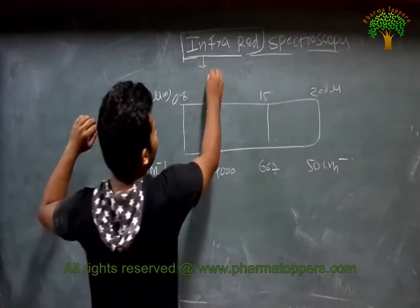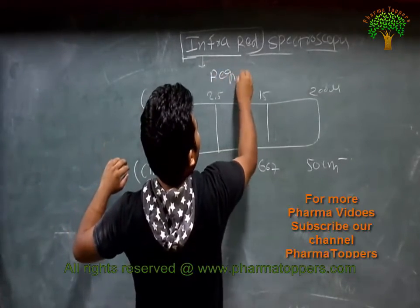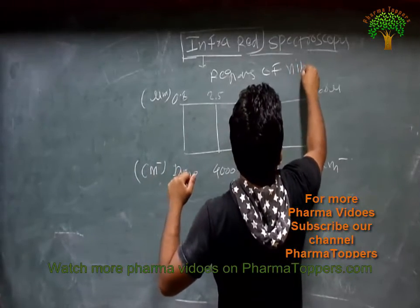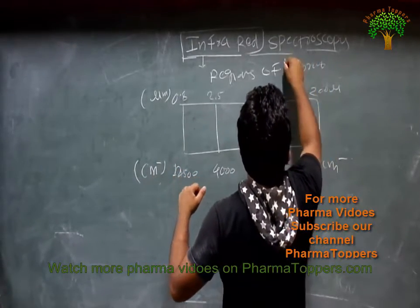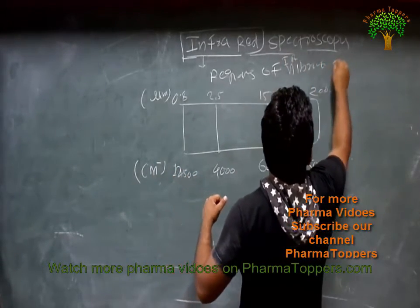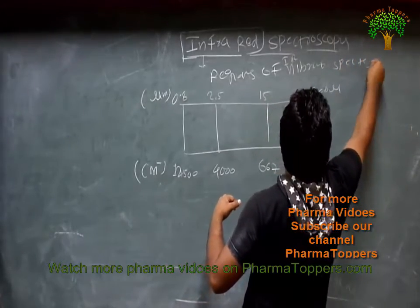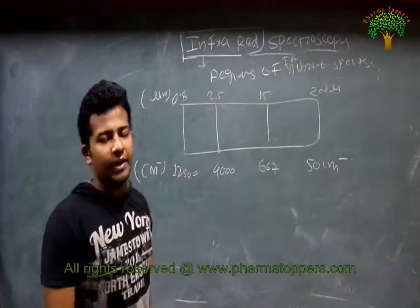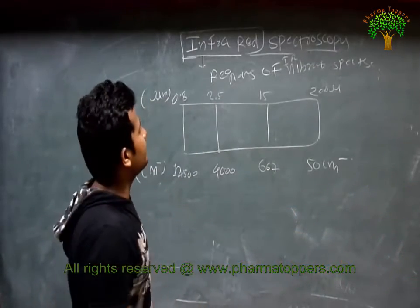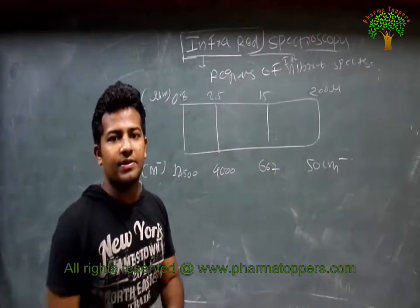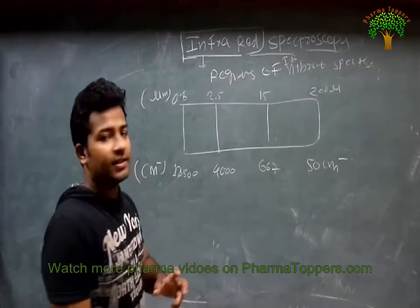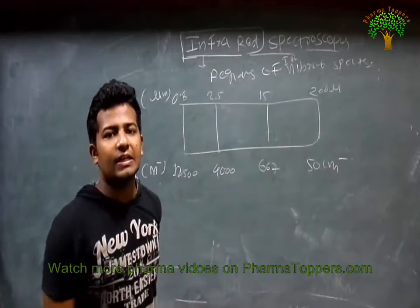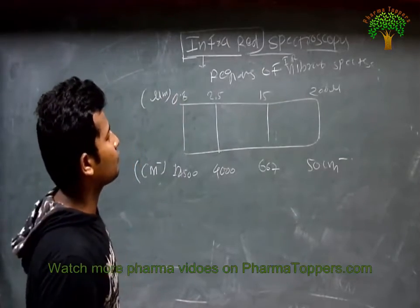Now we will see the regions of the IR spectrum. We know very well the basic principle of infrared spectroscopy is dependent on the vibrational energy level. There are transition markers between the vibrational energy levels in case of infrared spectroscopy.